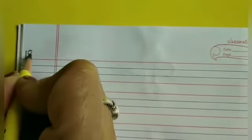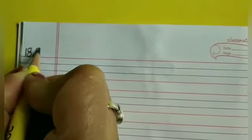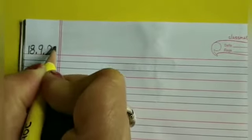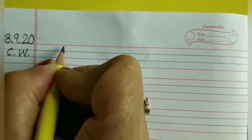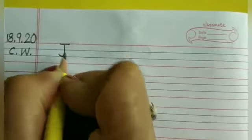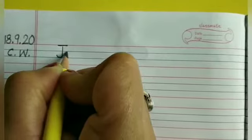So now this is my left hand side of the notebook and this is right hand side of the notebook. On the left hand side, see this is the red margin line. In the top most corner you will write today's date. That is 18.9.20 and below date write C.W. And on the first line write down the heading. That is jumbled words. Capital J, then other letters should be in small letters.